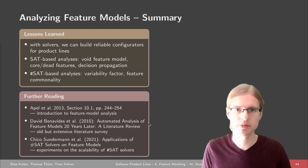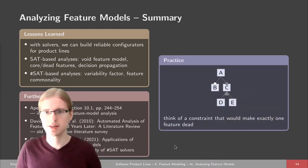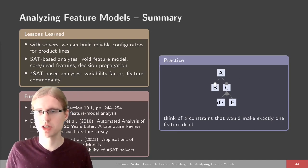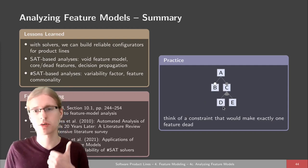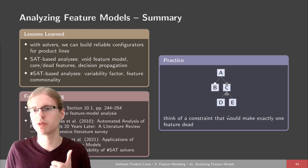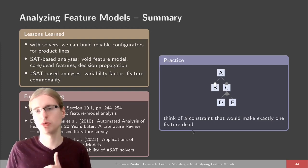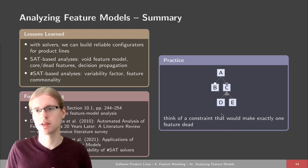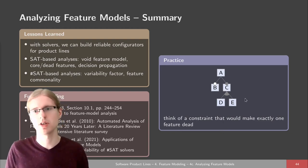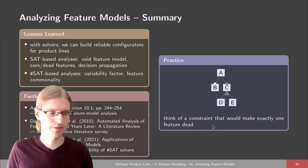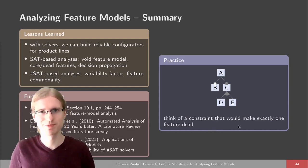There's some further reading available. As always, we have a small practice exercise, and this one's pretty easy. Just look at this feature model — your task is to think of one cross-tree constraint, a small formula placed below the model, which would make exactly one of these features dead. Not two, not none, but one feature dead. You can check correctness by downloading FeatureIDE, editing this model, and putting your constraint in — it will show whether that feature is dead. Thank you for listening, see you for the next lecture.